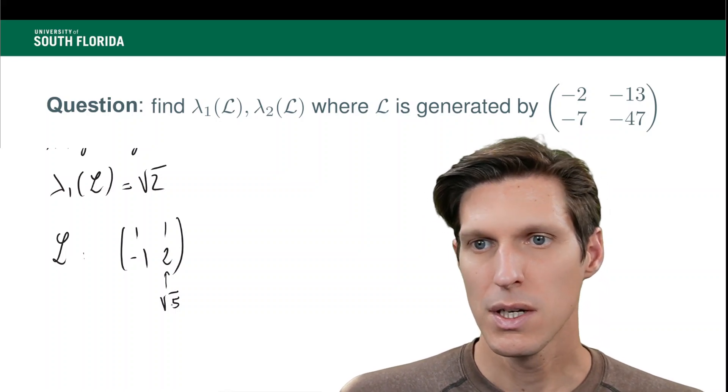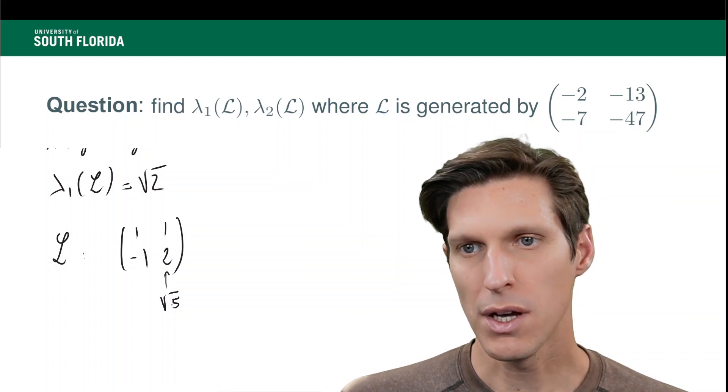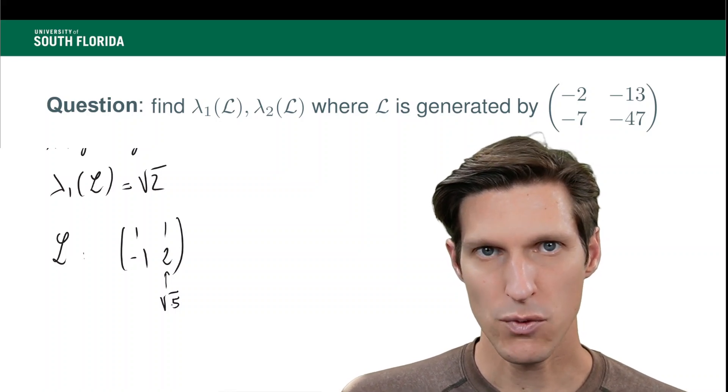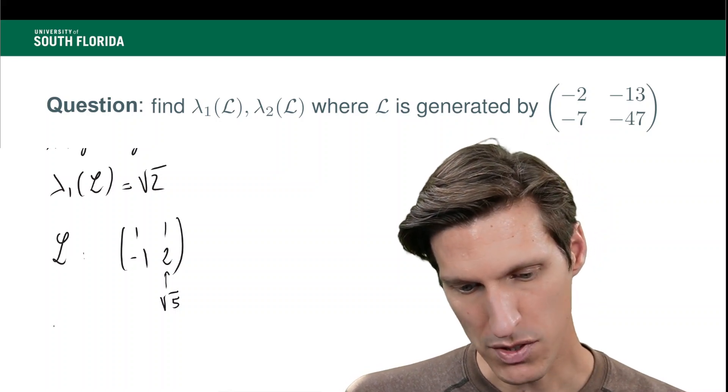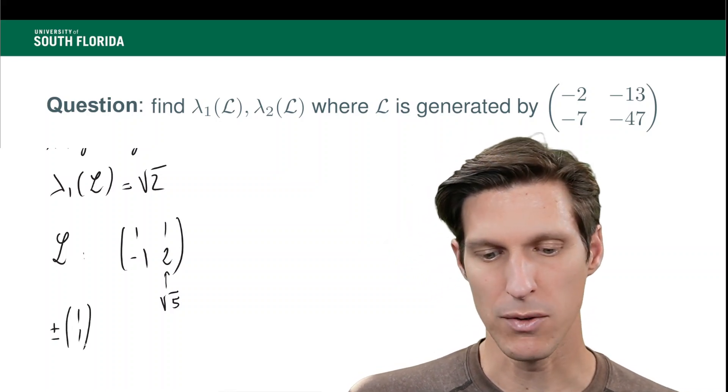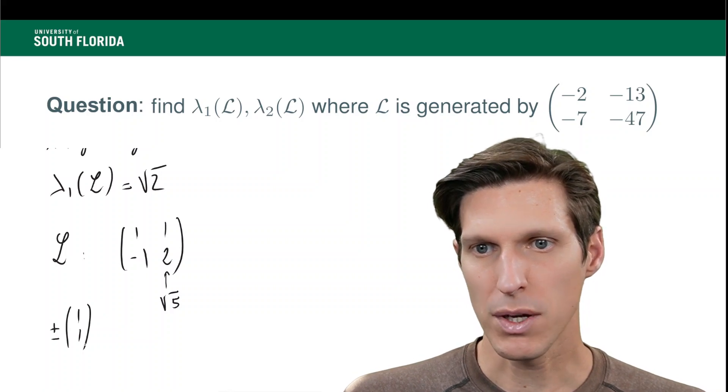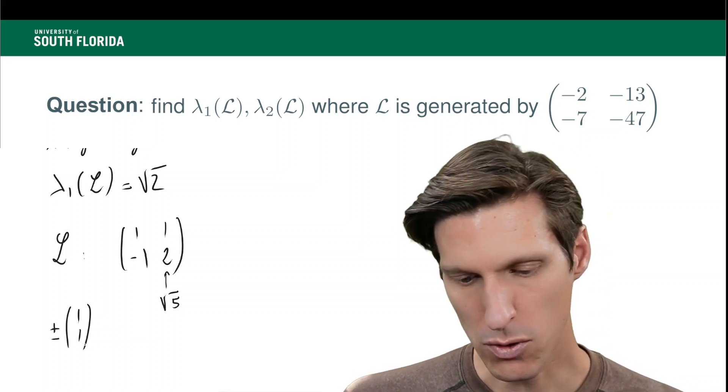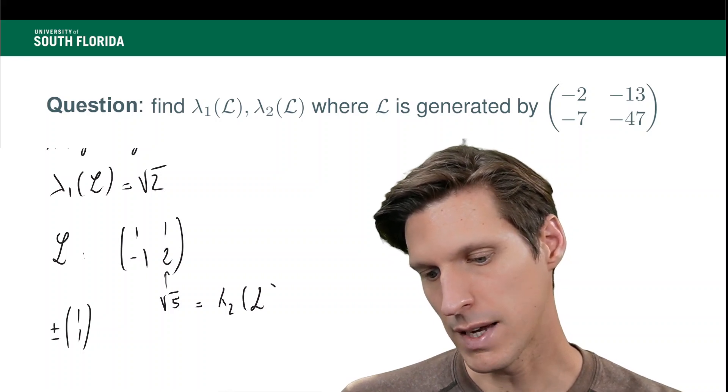So for this, one has to again argue, what would be another vector that is linearly independent from (1, -1), and that has length square root 2, and does it belong in the lattice? So there aren't that many possibilities. In fact, you're just stuck with plus or minus (1, 1), because (1, -1) and (-1, 1) are already taken. So again, by linear algebra, you can solve a linear system and argue that plus or minus (1, 1) does not belong in this lattice, and therefore square root 5 is equal to lambda 2 of the lattice.